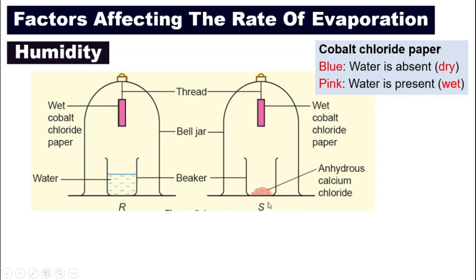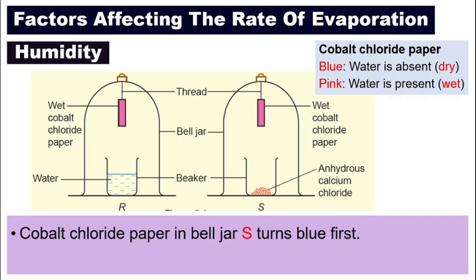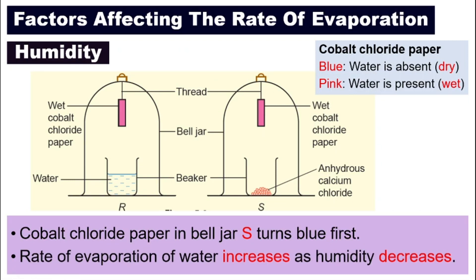Whereas in bell jar S, we put a beaker filled with anhydrous calcium chloride. This anhydrous calcium chloride will absorb the water vapor in the air, so the air inside bell jar S is dry. You will find that the cobalt chloride paper in bell jar S will turn blue first, meaning it will become dry first. We can safely conclude that the rate of evaporation of water increases as the humidity decreases — it is the opposite.